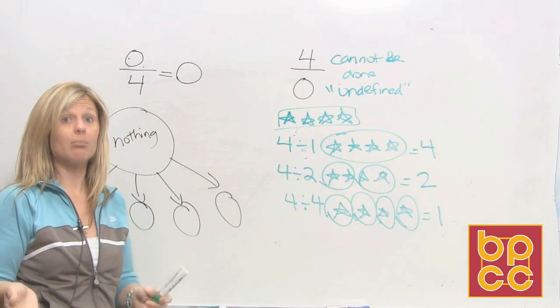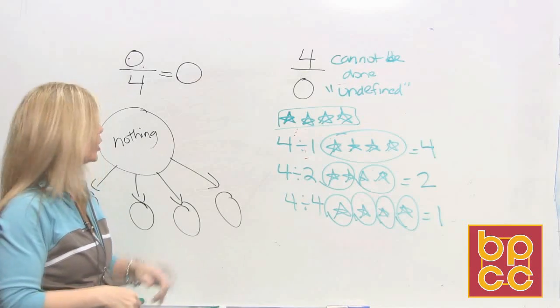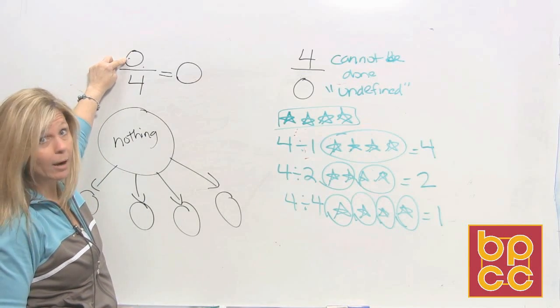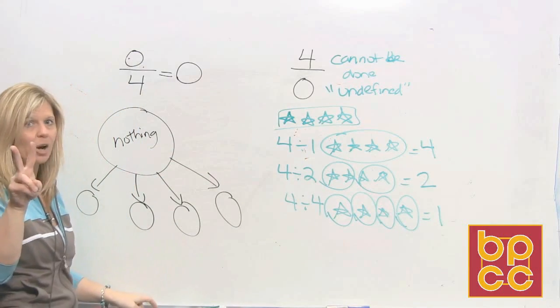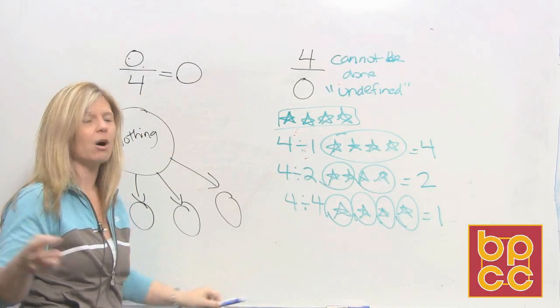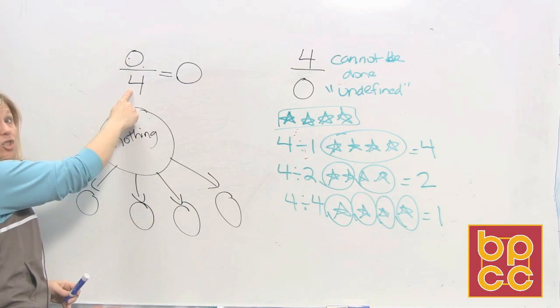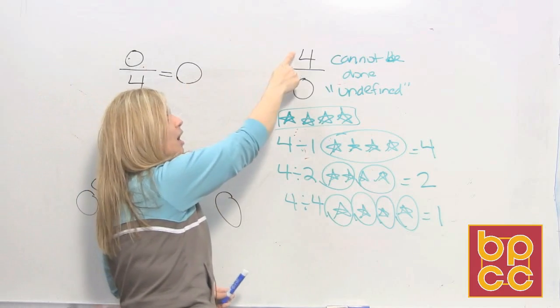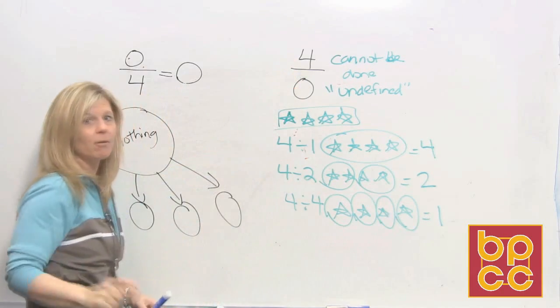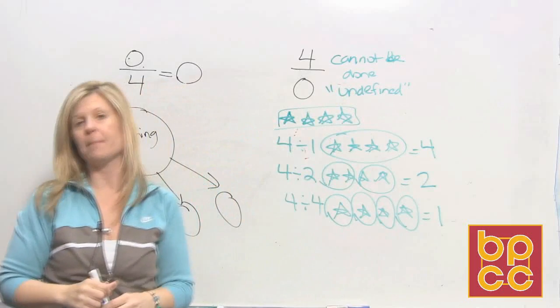Now, how are you going to remember this? Because it is very important to understand. In fraction world, you can have a 0 in the numerator, but you can't have it in the denominator. There are two ways I can help you remember this. First is by a song. 0 divided by a number is just fine. The value is 0 all the time. But, a number divided by 0 is a mistake. Undefined is what it makes.